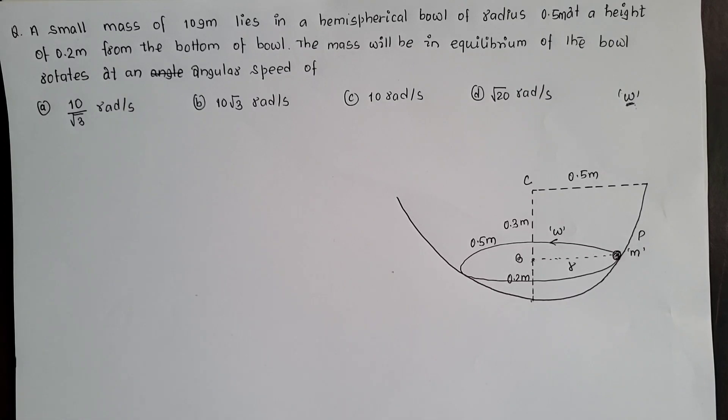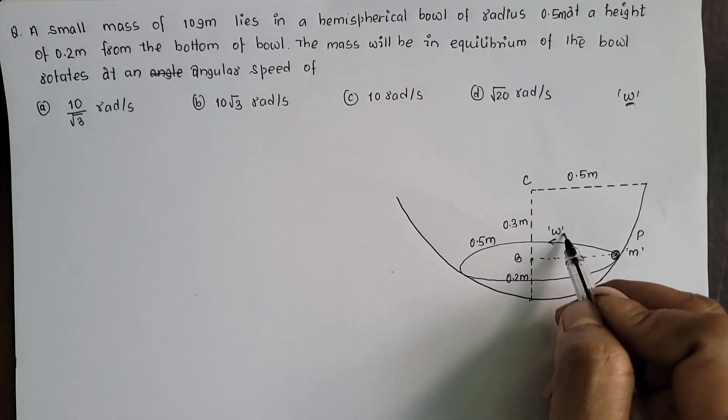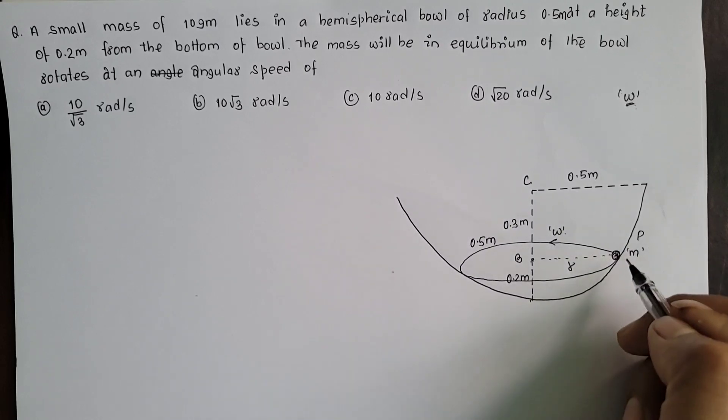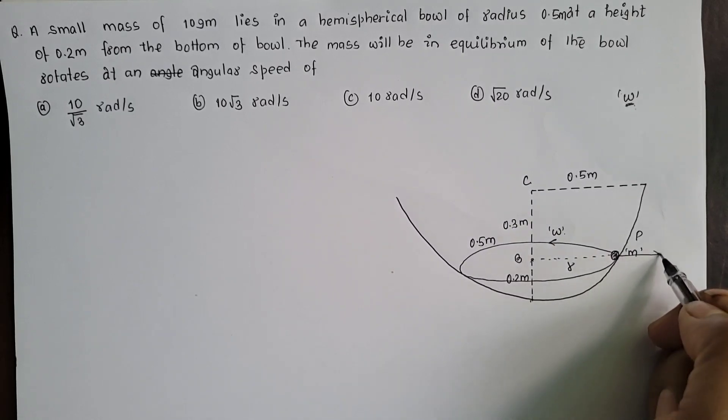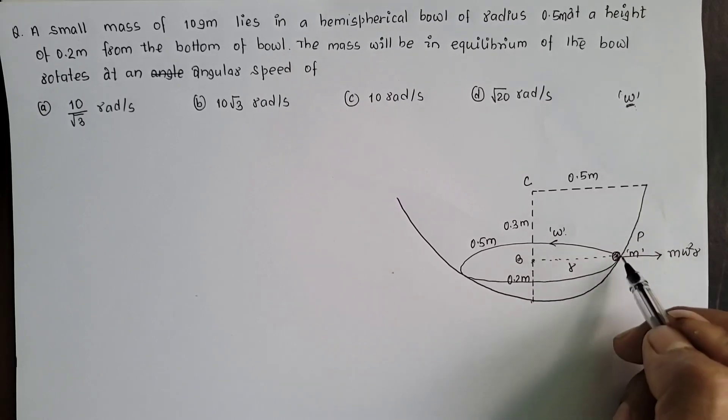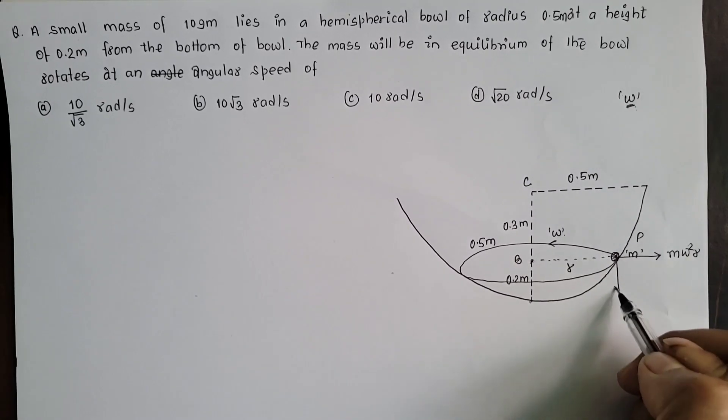Yo mass m ma acting bhoi ra ko force lai resolve aru. When this mass rotates with the angular speed of omega in the circular path of radius r, then it experiences the outward force, centrifugal force, which is equal to m omega square r. Mass m le garda kheri isko weight mg vertically downward.